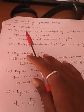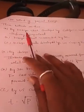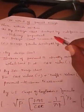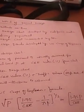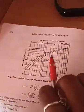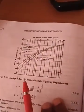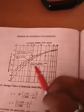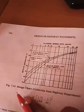In the case of CBR method of flexible pavement design, we have three methods or three parts. First, we can design the thickness of the flexible pavement by the design chart developed by the California State Highway Department. This chart can be used for the design of thickness of flexible pavement.